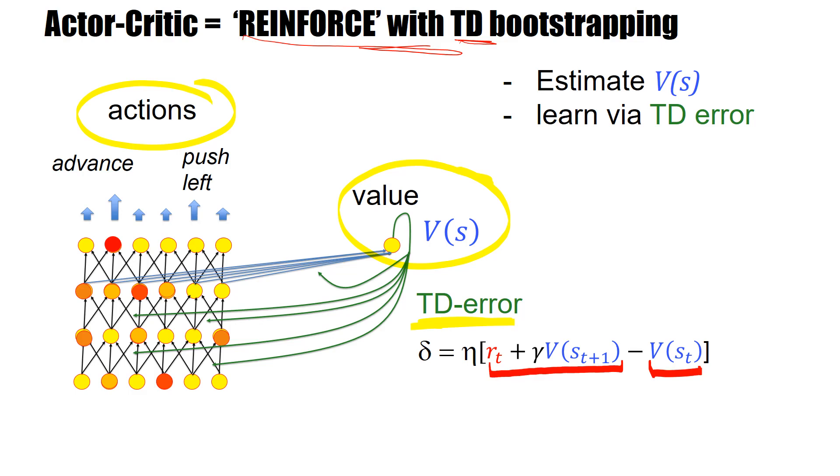So let's compare this actor-critic with the reinforce algorithm with baseline subtraction that we have seen in the previous video. So Sutton and Barto call this version here where we use the TD error, the actor-critic network.